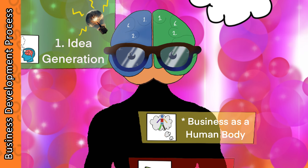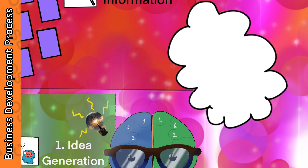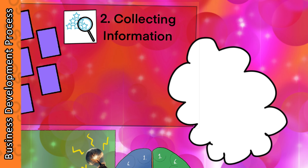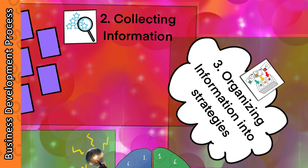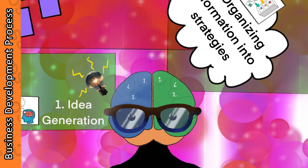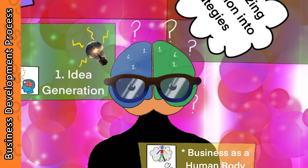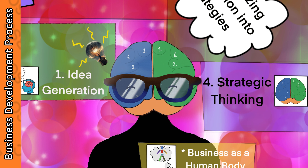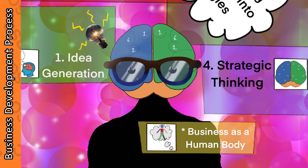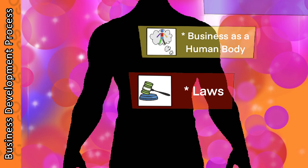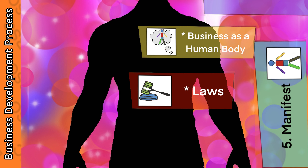Understanding these laws and concepts gives us how we can design a good business. Next, we must organize the information in our third step called organizing information into strategies. Is that a good strategy? Is there a better way of accomplishing that task? These questions and more are contemplated in the fourth step called strategic thinking. Till now, business is only theoretical and conceptual. Let us execute the strategy as part of the fifth step called manifesting.